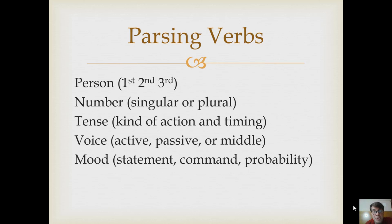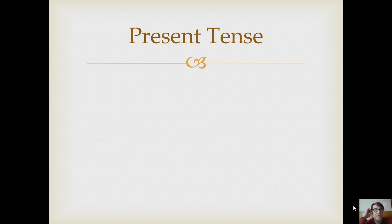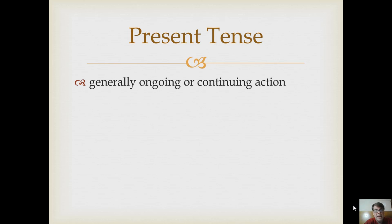This video is specifically about the present middle and passive. The present tense is generally ongoing or continuing action. It can mean something simple like 'the train hits cars,' but the primary kind of action for the present tense is continuous — 'the train is hitting cars' captures that ongoing or continuing flavor.